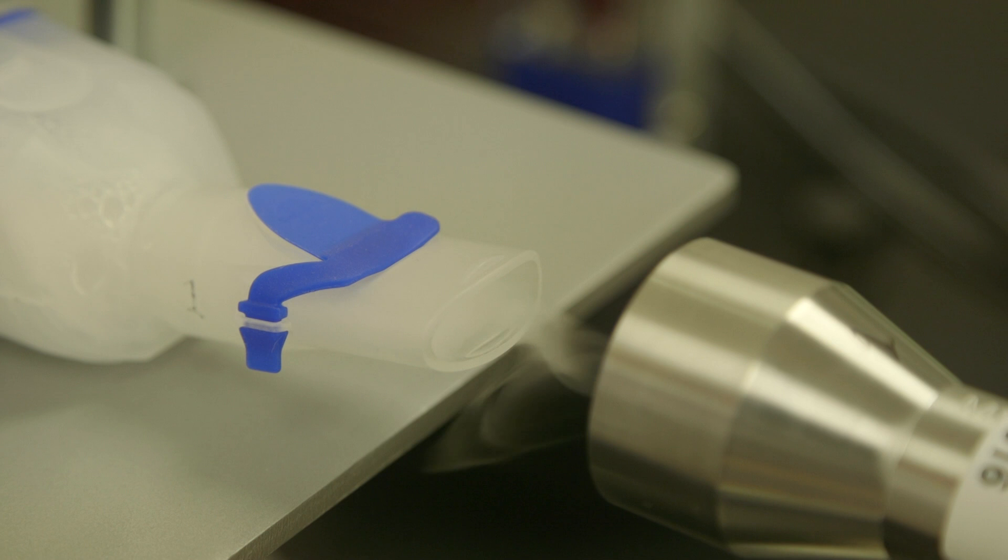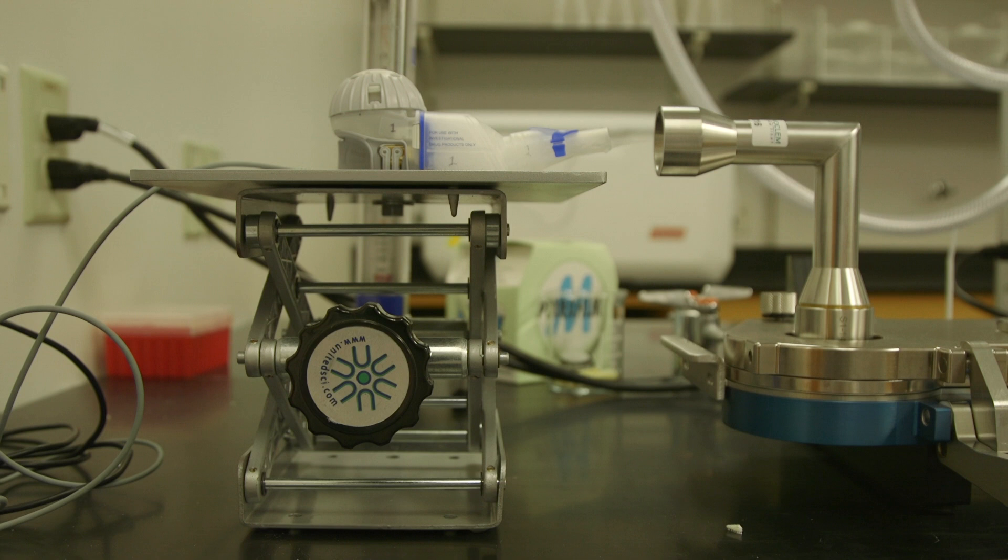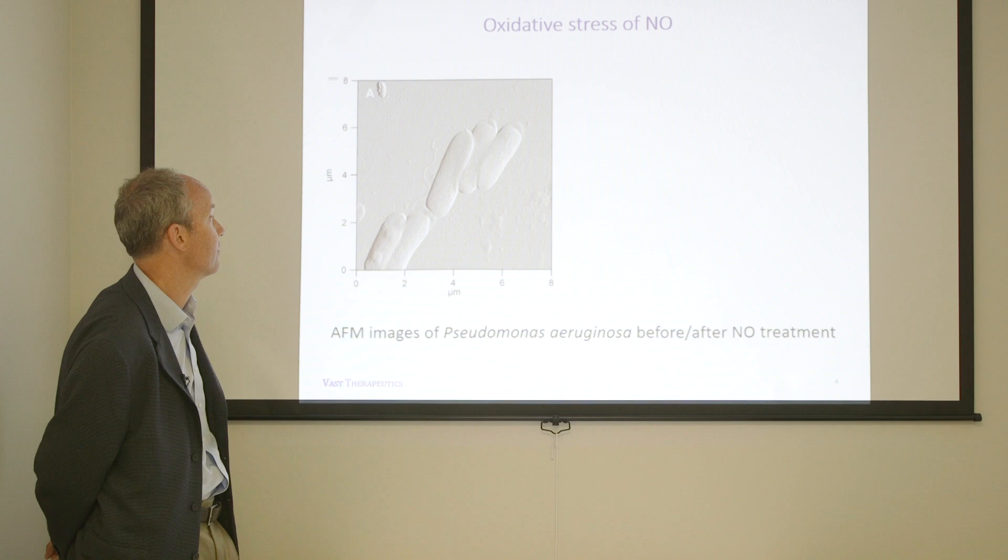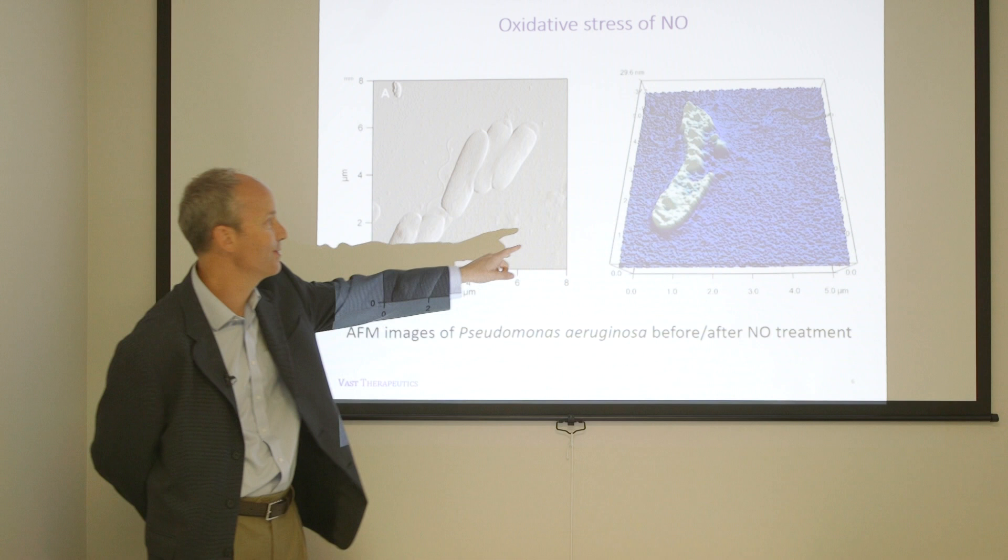It turns nitric oxide into a kind of natural smart bomb, attacking and then destroying bacterial cells in multiple ways. This is an atomic force microscope image of bacteria, or a few bacteria, before NO exposure and then after NO exposure. What you'll see is that they don't look like that anymore. You have essentially broken apart their exterior membrane.